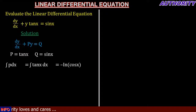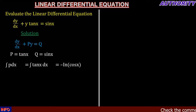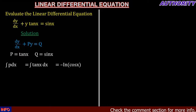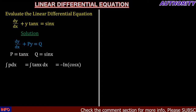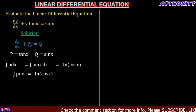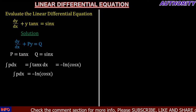Now let's integrate P with respect to x. That means we are going to have the integral of P dx, which is the integral of tan(x) dx. Integrating tan(x) with respect to x gives us minus ln(cos(x)).